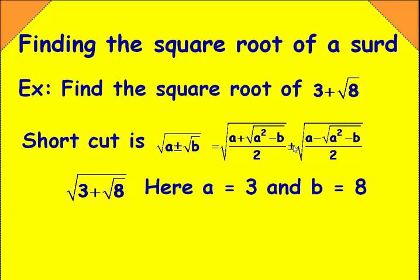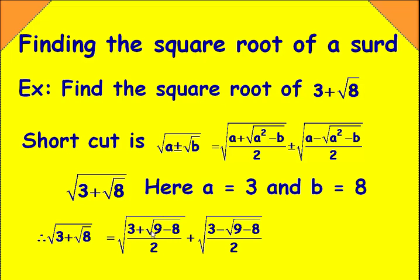So, taking the plus sign and using the corresponding values in the formula, we get: square root of (3 + √8) equals square root of (a + √(a² - b)) / 2, that is (3 + √(9 - 8)) / 2, plus square root of (a - √(a² - b)) / 2, that is (3 - √(9 - 8)) / 2.